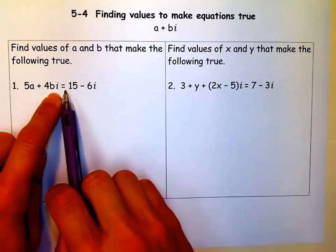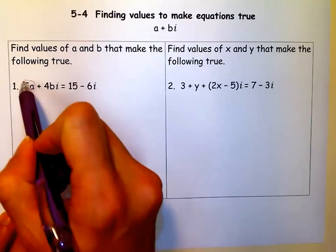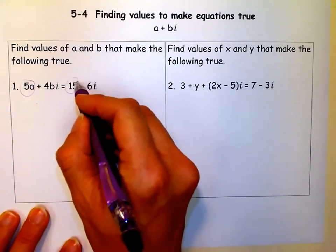Remember, if two things are equal and they're complex numbers, then we know their real parts, this is the real part, it always comes first and it doesn't have an I with it, has to be equal to the real part.